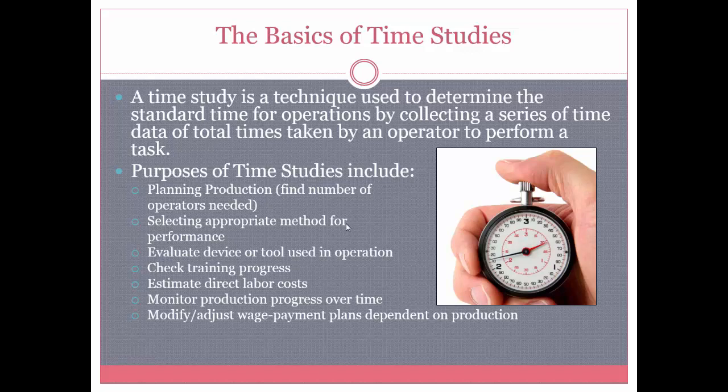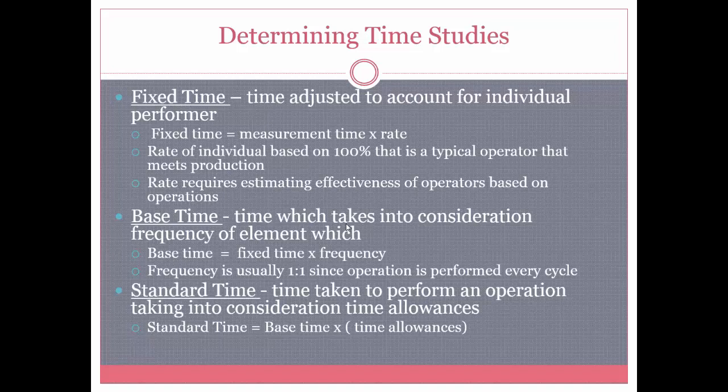So how do you determine a time study and how do you determine the standard times? First of all, you need a reliable watch that can take proper time with specific seconds or tenths of a minute. Then you get your fixed time, which is the time adjusted to account for the individual performer. When you're doing a time study, you want to look for a typical operator — someone that meets your production goals, works at an average rate, and you would consider this person 100%.